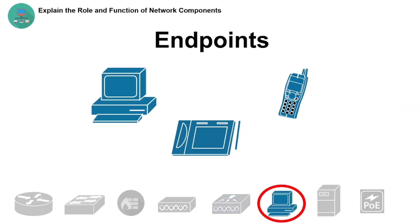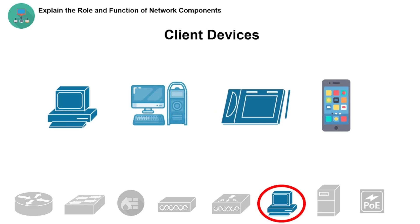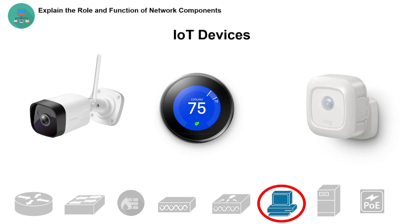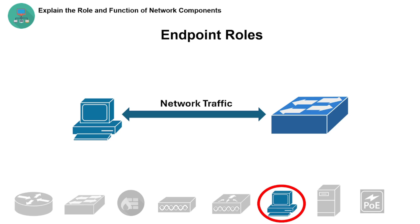Next are endpoints — any device that connects to the network and communicates over it. Types of endpoints include client devices, which are human-driven to send requests to a server and interact with data (e.g., laptops, desktops, tablets, and smartphones), and Internet of Things (IoT) devices, which collect data, share it over the internet, and automate tasks often without constant human input (e.g., smart cameras, sensors, thermostats). Endpoints generate and consume network traffic and authenticate to the network, often via DHCP or DNS.